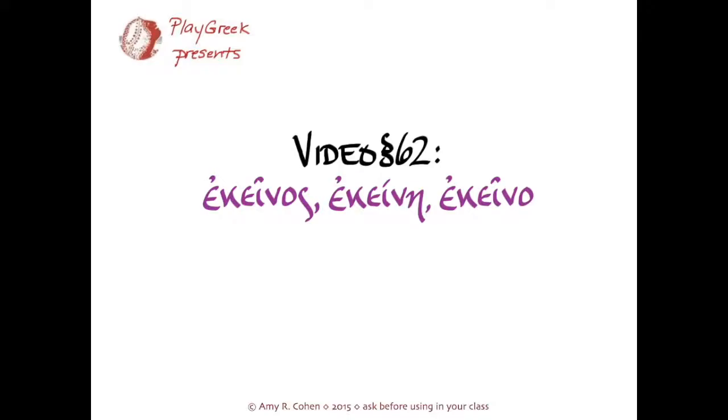This video is on the demonstrative adjective ἐκεῖνος, ἐκείνη, ἐκεῖνο, and it's section 62 in Hanson and Quinn's Greek Intensive Course, where you can find it on pages 175 and 176. A demonstrative is something that points something out, and it can point it out geographically in space or in time, and also point something out in importance.